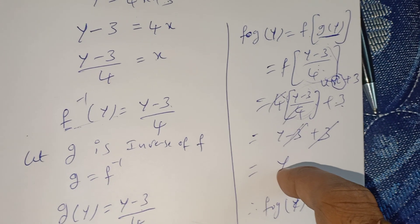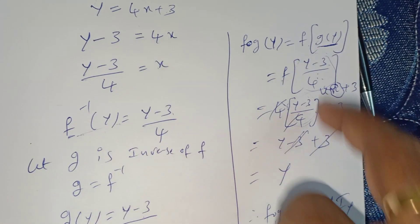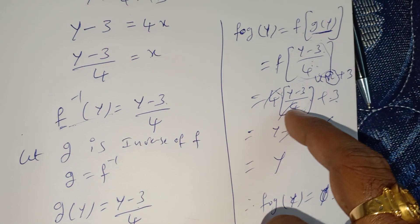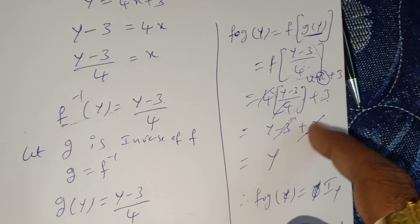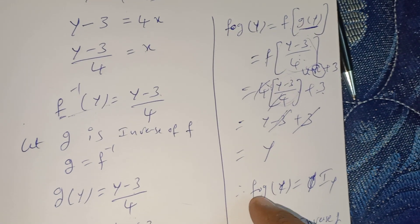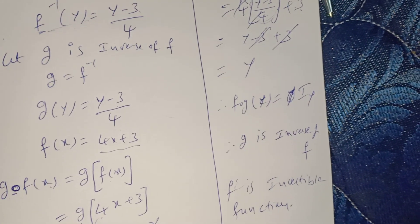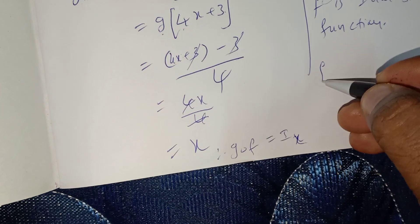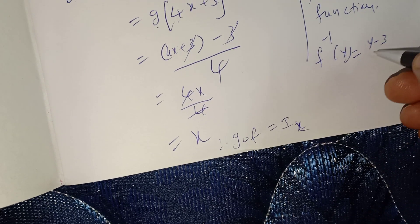f∘g(y): f(x) = 4x + 3, in place of x substitute (y - 3)/4. The 4s cancel, giving y - 3 + 3. The 3s cancel, giving y. Therefore f∘g = Iᵧ. Therefore g is the inverse of f, therefore f is an invertible function. And we can write the last step: f⁻¹(y) = (y - 3)/4.